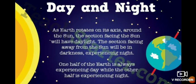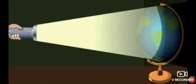What happens over here? The part that is facing the sun experiences daytime and the other half of the earth is experiencing nighttime. So that is how we have day and night.